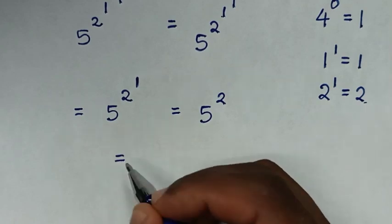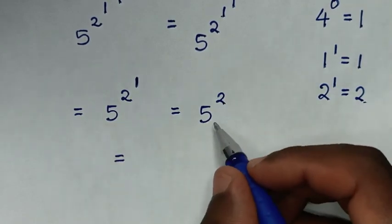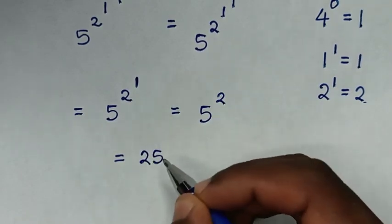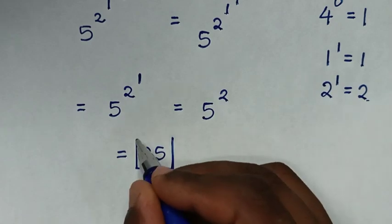It will be equal to 5 power of 2, which is same as 5 times 5. 5 times 5 is 25. Therefore, this is our final answer.